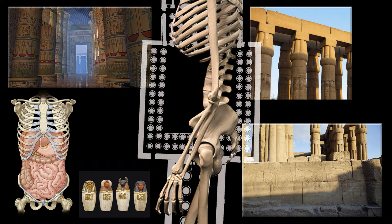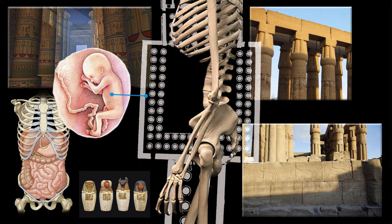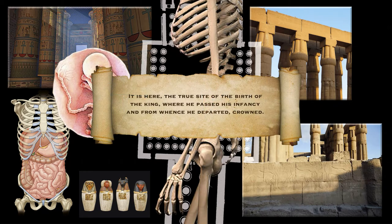When researchers first started investigating the temple and had worked out that it was mapped out according to the human form, they were looking for further confirmation. Having a feeling that because the Egyptians placed such importance on the umbilical cord in the birth process, on the eastern wall of this courtyard there should be some reference to the navel. Sure enough, on one of the architrave stones in the center of the wall were hieroglyphs that stated: 'It is here.'